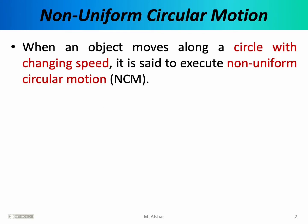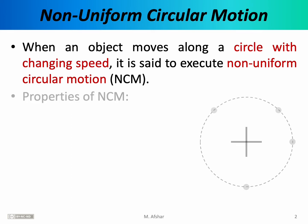Circular motion in general can be quite complicated. Last time we discussed a simpler case of circular motion known as uniform circular motion, where the speed of the object was constant. In this lecture we want to consider non-uniform circular motion. When an object moves along a circle with a changing or variable speed, it is said to execute non-uniform circular motion.